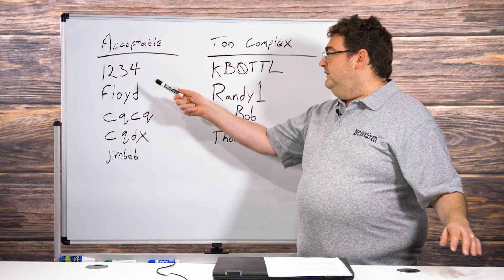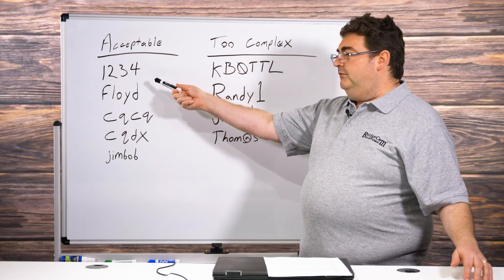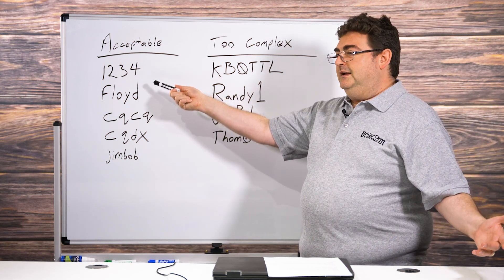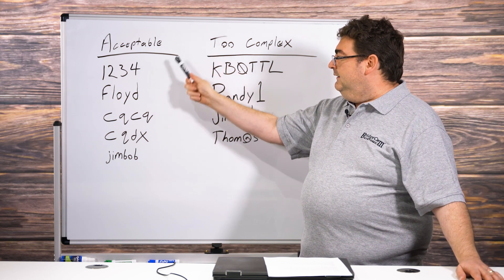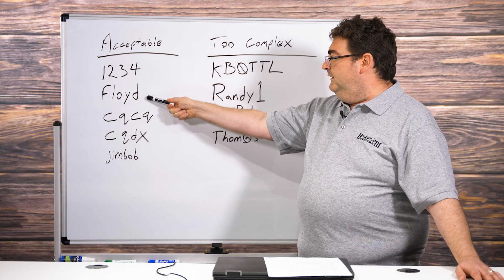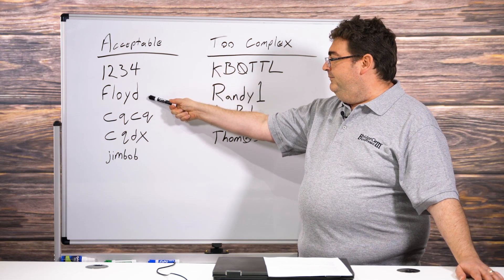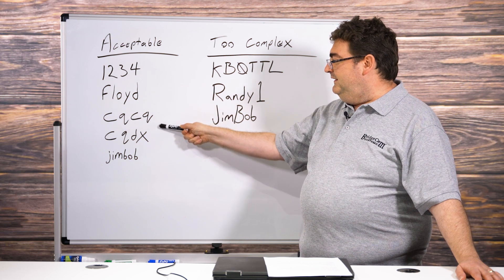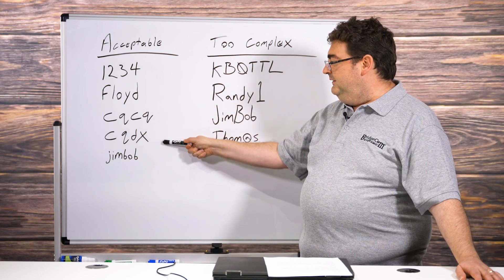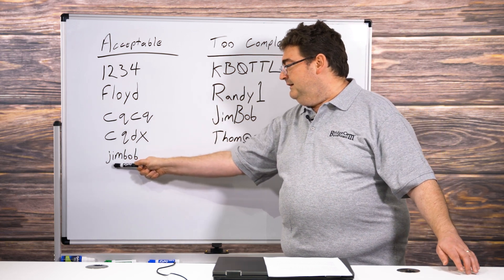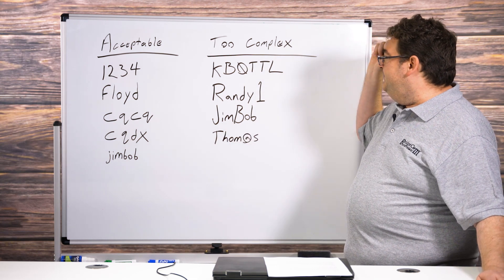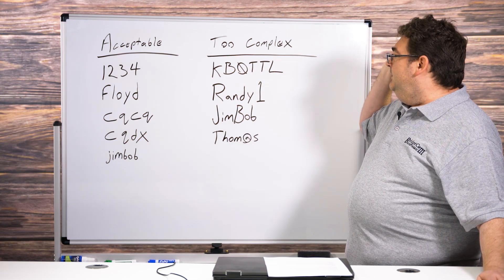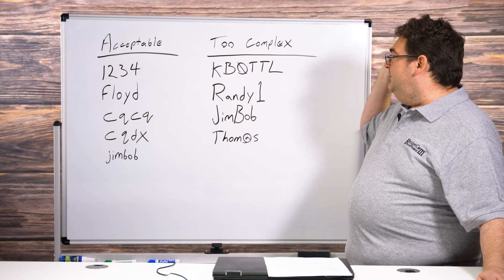So examples here: 1234 — of course you might want to get a little more creative, like your home address number or what have you. All lowercase 'floyd' (F-L-O-Y-D), lowercase 'CQCQ', 'CQDX', or even a longer name, but again, all lowercase. These are the kinds of passwords we're going to select.